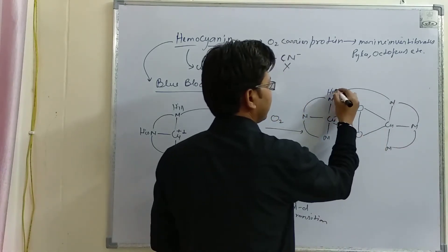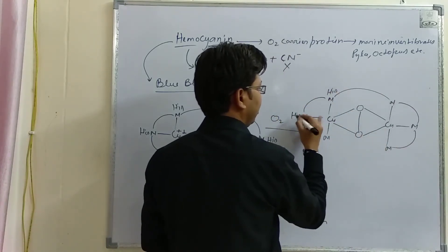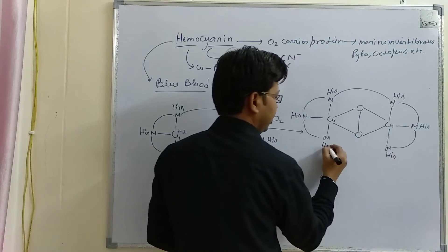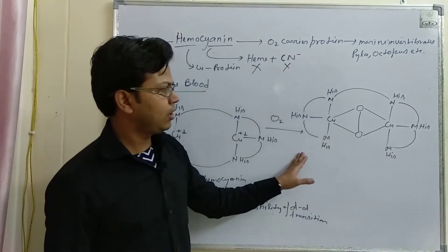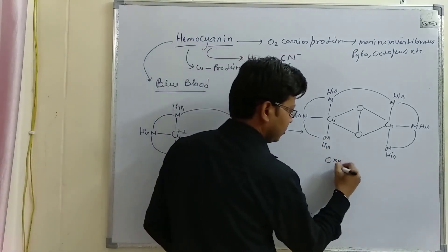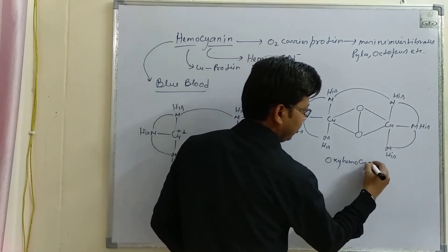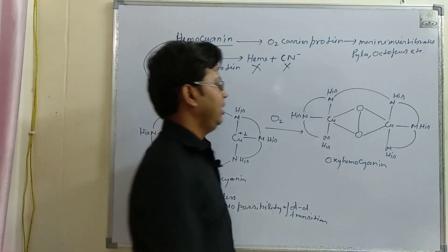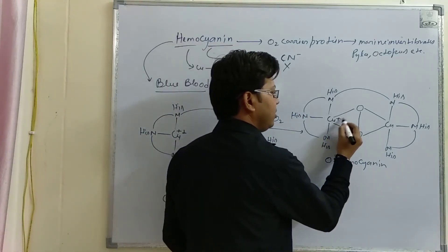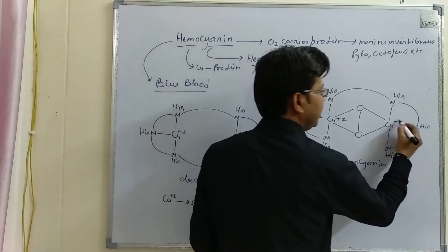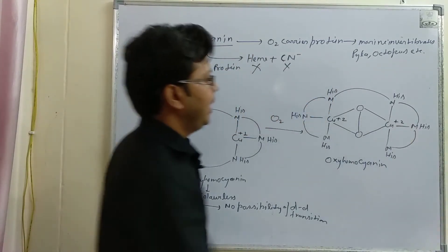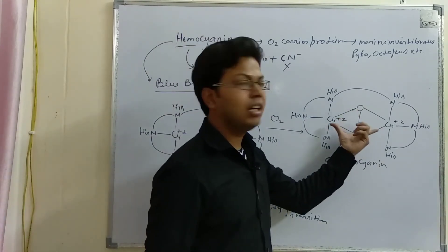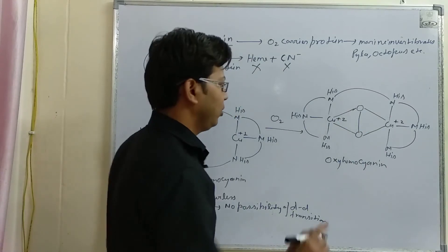This is the structure of the oxyhemocyanin. In the oxy form of hemocyanin, each copper has an oxidation state of plus two, and one oxygen atom binds with both the copper atoms.